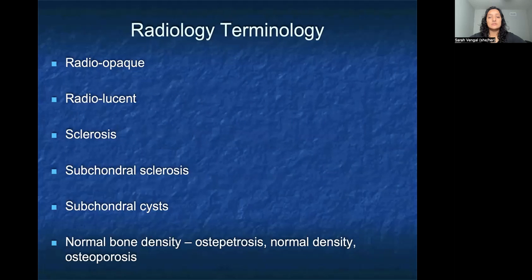These are some of the common radiographic terms when we're talking about x-rays. We usually talk about something that's radio-opaque or lucent. We often talk about sclerosis or subchondral sclerosis and subchondral cysts and whether or not there's a normal bone density.